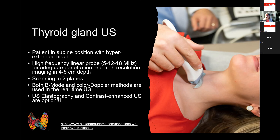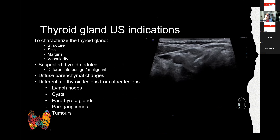The patient is usually in a supine position with the head hyperextended, chin lifted up. Thyroid ultrasound indications include characterizing the thyroid gland structure — assessing homogeneity, structural changes, size, margins (smooth or bulging, suggesting enlargement), and vascularity. Goiter may be diffuse or nodular.